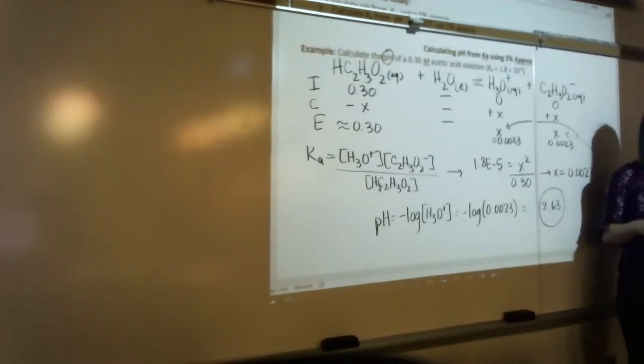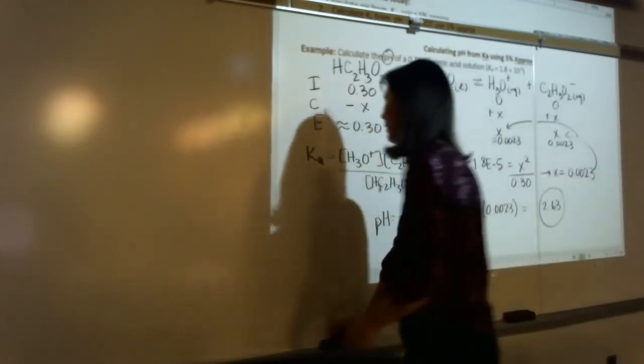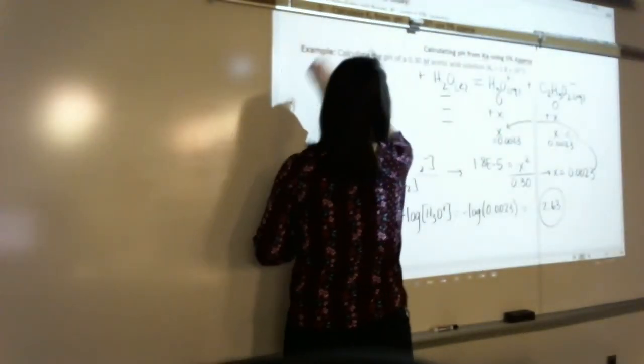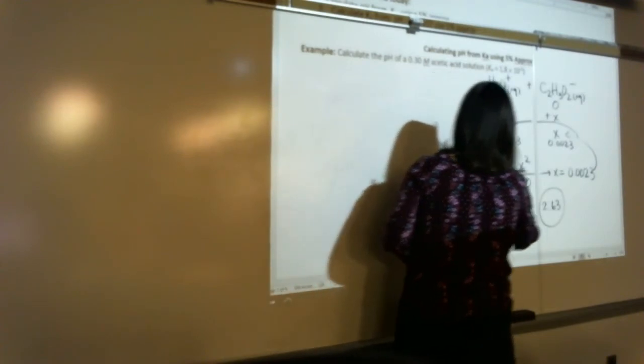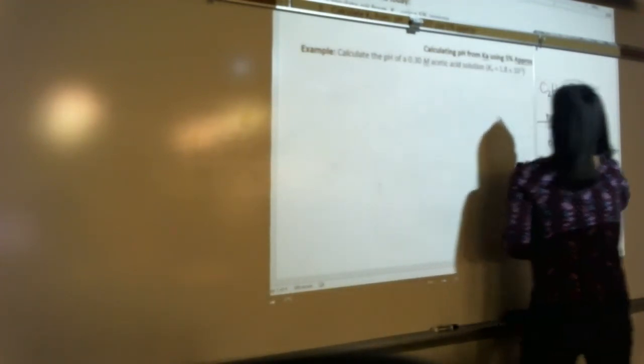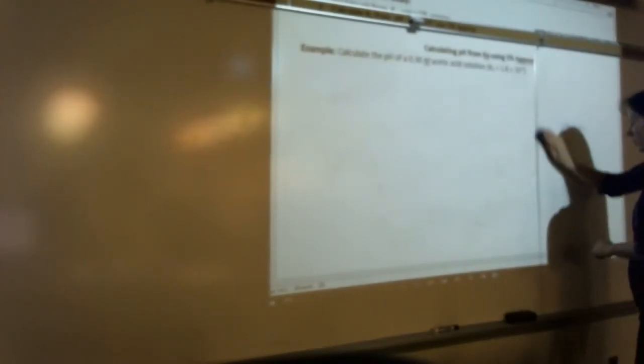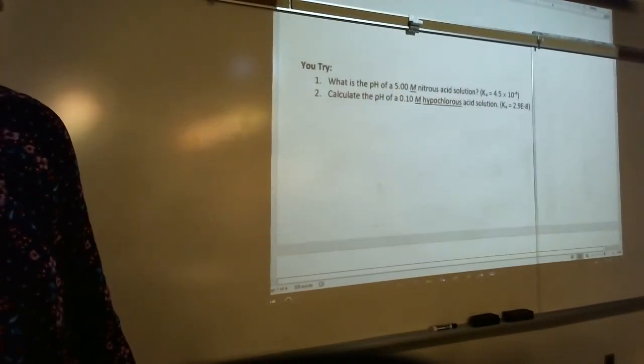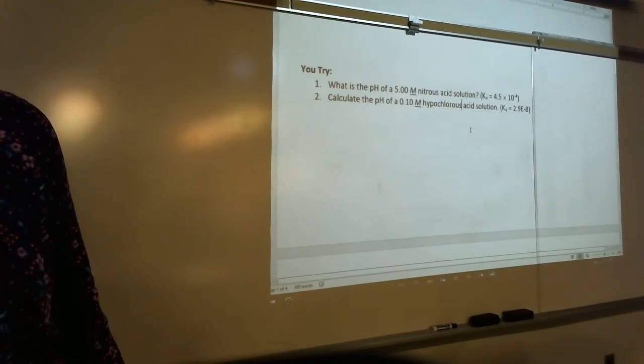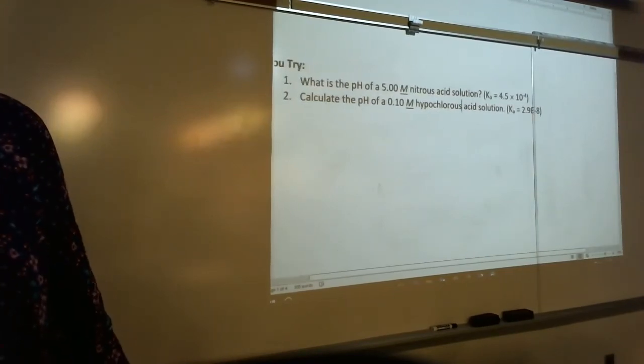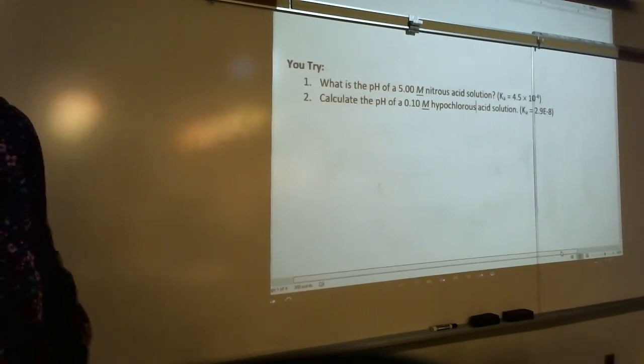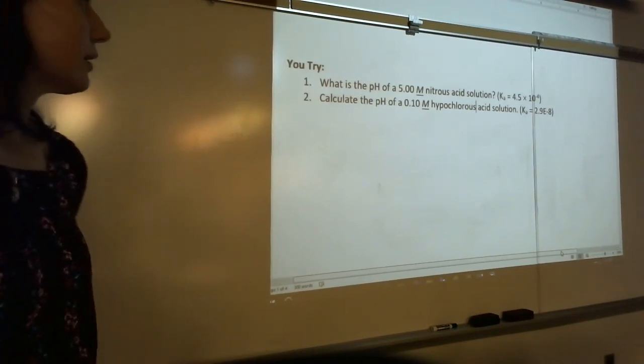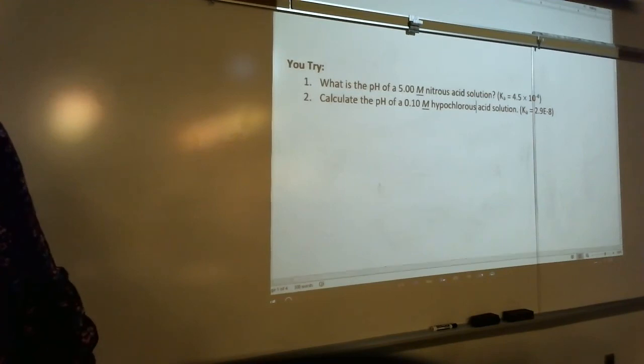We good? Alright. So there are two problems for you to try. Is everyone okay if I erase? Does anyone need this? Alright. If you look at the bottom of your note taking guide there, there are two problems for you to try. The screen moved up. So you try these two. What's the pH of a 0.5, excuse me, of a 5 molar nitrous acid solution? There's its Ka. What's the pH of a 0.1 molar hypochlorous acid solution? There's its Ka. I'll pause the recording and give you a chance to try these.